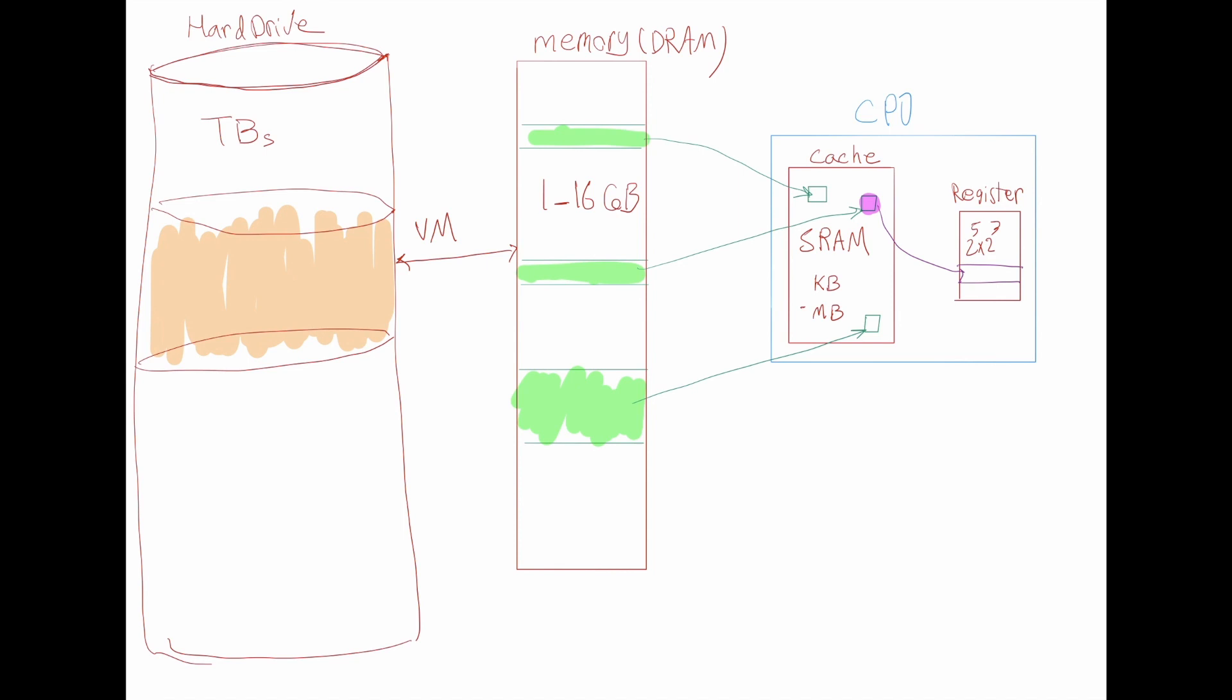In our desire to predict what parts of the memory are going to be used often and what parts are not, we cannot rely on any specific knowledge of specific programs. We have to come up with some very high-level rules that tend to be true for all the programs that people want to write.